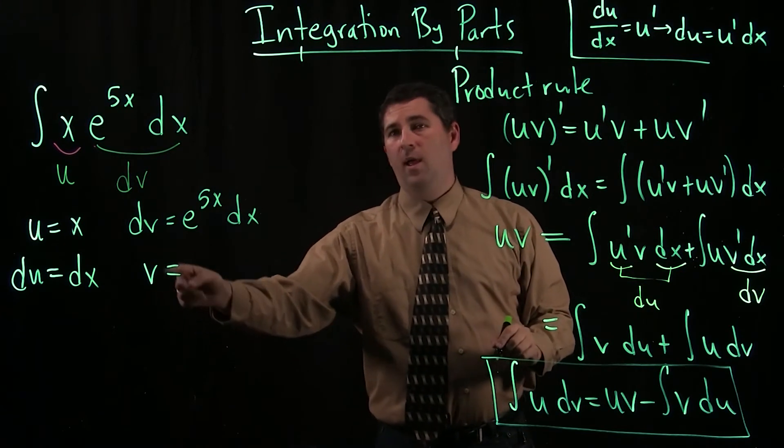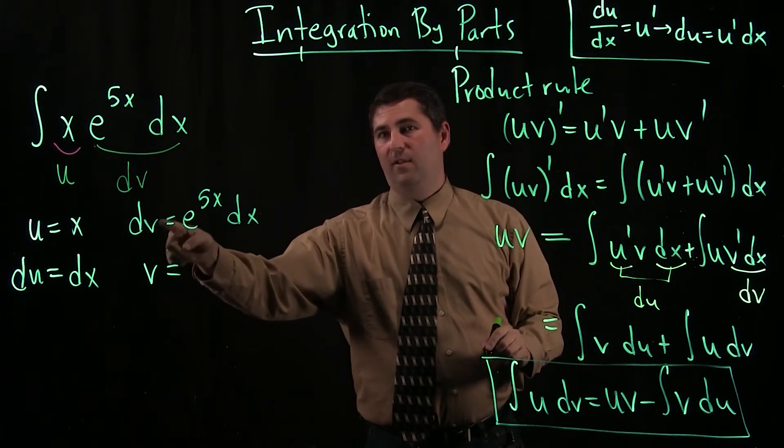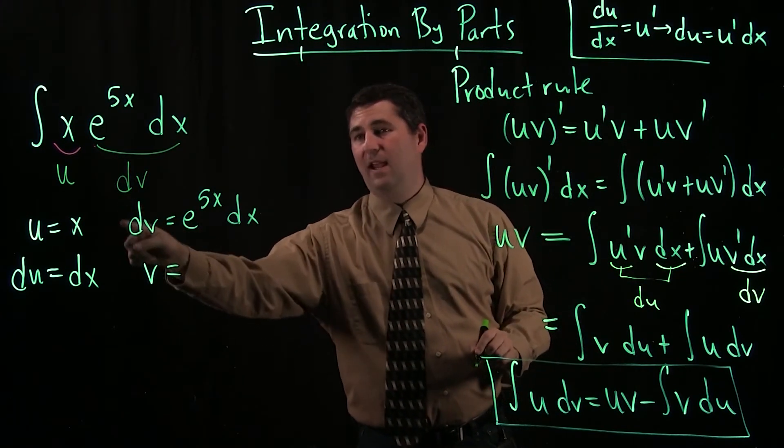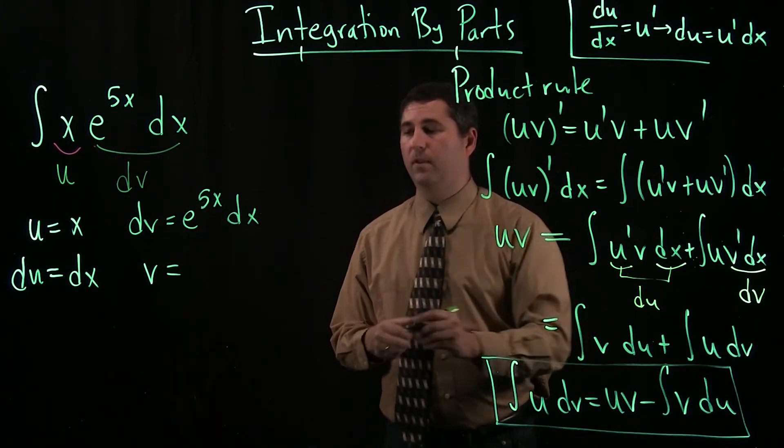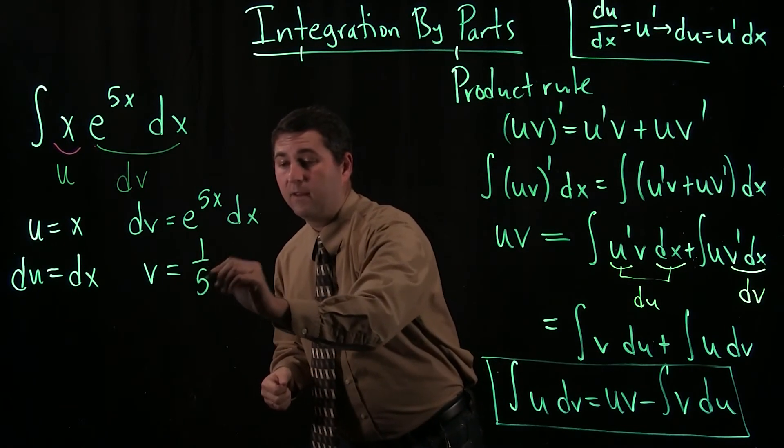Now, how about over here? Well, I know what dv is. If I want to get v, I have to take an antiderivative. So, I need an antiderivative of e to the 5x. Okay, this is 1 fifth e to the 5x.